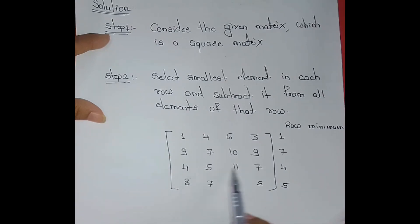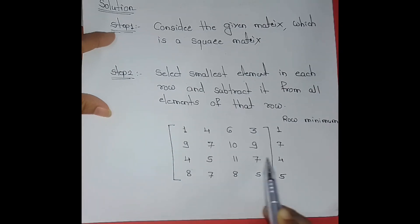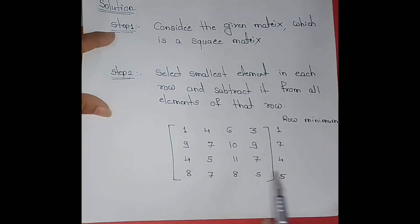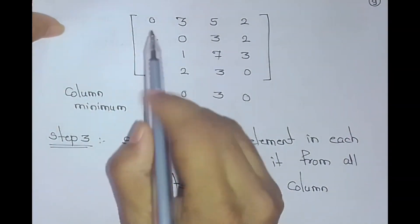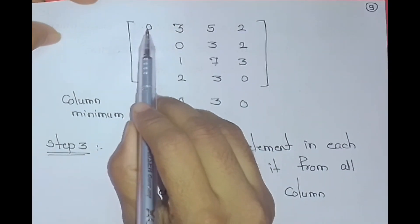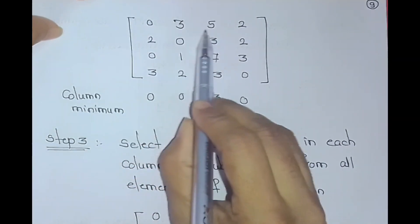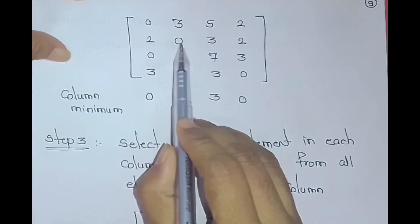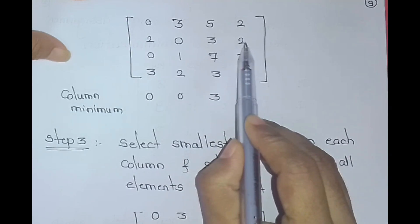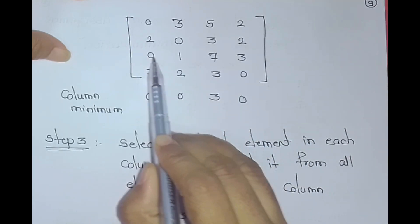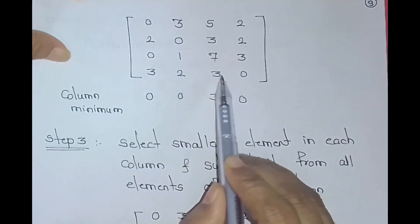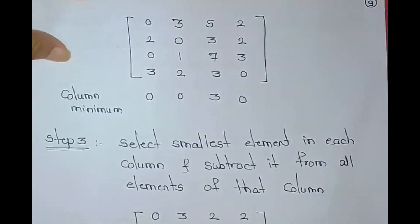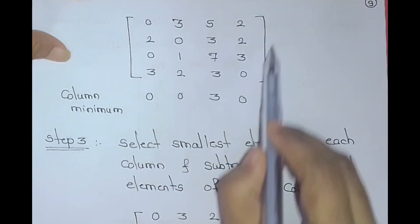Continuing row reduction: the reduced values are 0, 3, 5, 2, 2, 0, 3, 2, 0, 1, 7, 3, 3, 2, 3, 0. This completes the row reduction step.